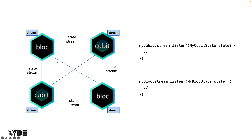Both Cubits and Blocs dispatch a new state to the state stream. In the UI, it listens to the stream and takes action such as rebuilding the UI. Cubit and Bloc have a getter called stream for the state stream. Therefore, Cubit and Bloc can listen to the necessary state stream. If you want to read the state value of another Cubit or Bloc from a specific Cubit or Bloc, you can listen to the stream getter on the myQubit or myBlock instance as shown on the right. The callback registered to listen is executed every time a new state value is dispatched to the stream.